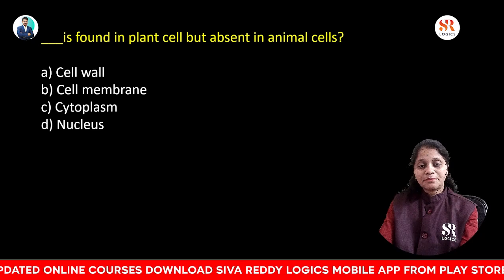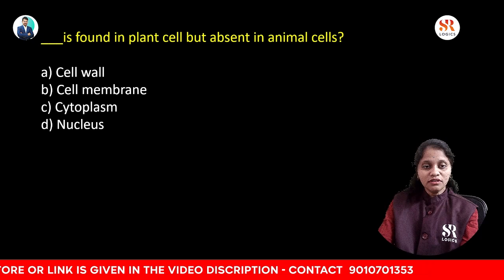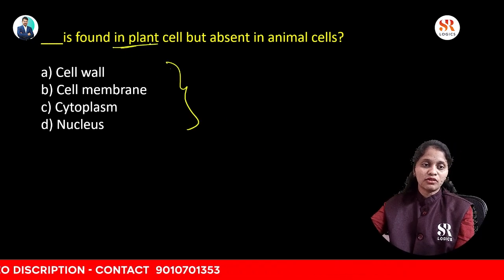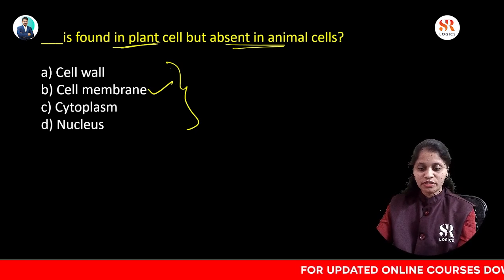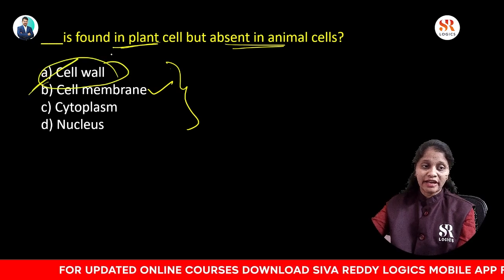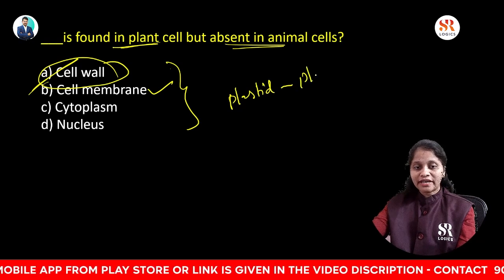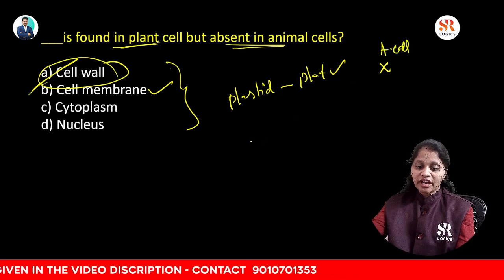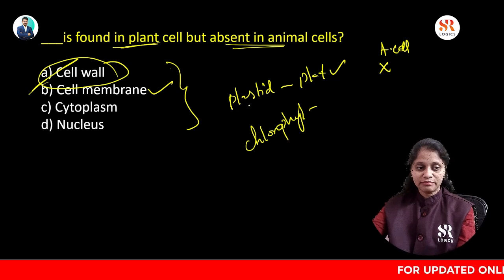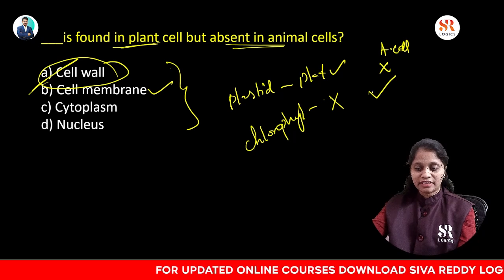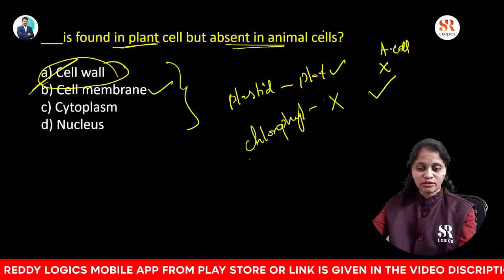Which is found in the plant cell but absent in the animal cell? Options: cell wall, cell membrane, cytoplasm, nucleus. Cell membrane, cytoplasm, and nucleus are present in both plant and animal cells. However, cell wall, plastid, and chlorophyll are found only in plant cells and are absent in animal cells.